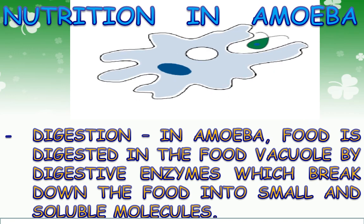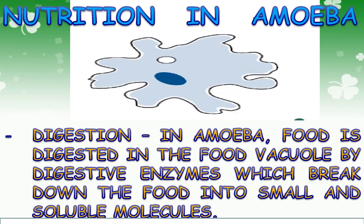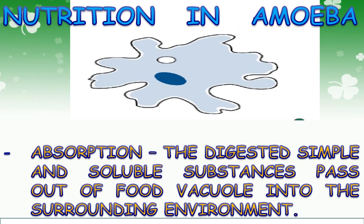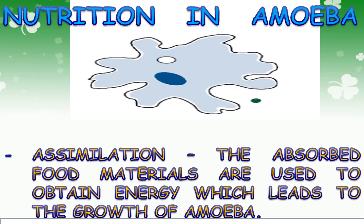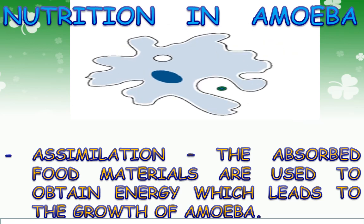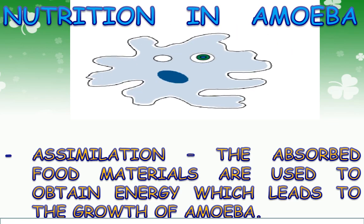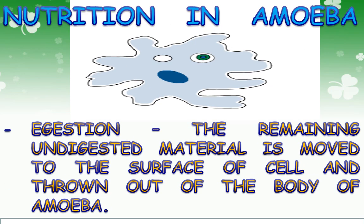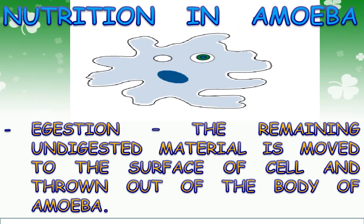In amoeba, food is digested in the food vacuole. Digestive enzymes present in the food vacuole break down the food into small and soluble molecules. The digested food materials then pass out of the food vacuole into the surrounding cytoplasm — this is absorption. The absorbed food materials are used to obtain energy, which leads to the growth of amoeba — this is assimilation. The remaining undigested material is moved to the surface of the cell and thrown out of the body of the amoeba.